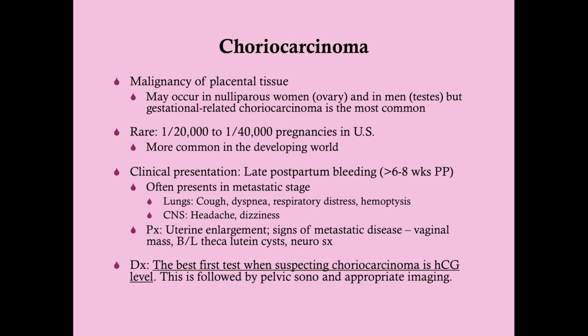The clinical presentation is late postpartum bleeding — a woman who's bleeding more than six to eight weeks after she delivers. It often presents in the metastatic stage. If it invades the lungs, there can be cough, dyspnea, respiratory distress, and hemoptysis. If it invades the brain, it can be associated with headache, dizziness, and other symptoms correlating with a space-occupying lesion. There can be GI symptoms, and it can also metastasize to the vagina, resulting in a very vascular mass that easily bleeds. On physical exam, you may note uterine enlargement as well as signs of metastatic disease or a vaginal mass.